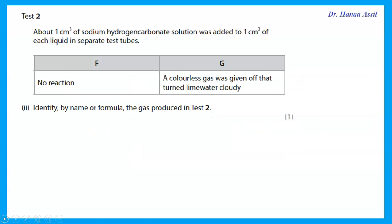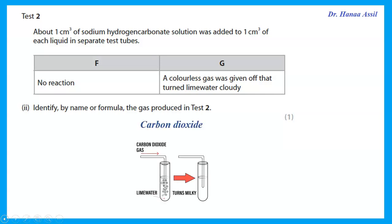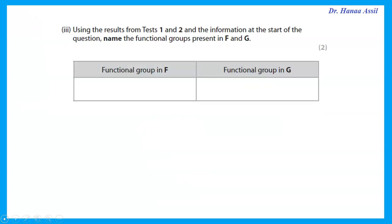About 1 cm³ of sodium hydrogen carbonate solution was added to each liquid. Sodium hydrogen carbonate reacts with acids but not alcohols. With F there was no reaction, but with G a colorless gas was given off that turned lime water cloudy. That gas is carbon dioxide. Therefore F is the alcohol and G is the carboxylic acid.